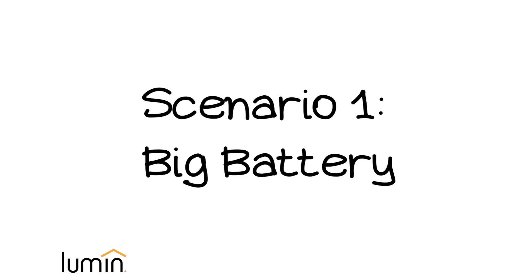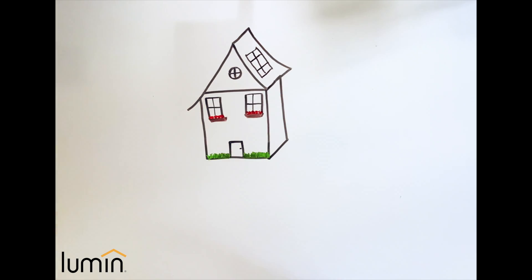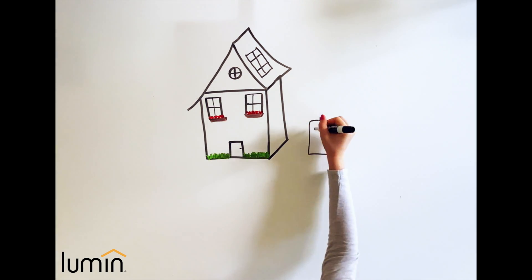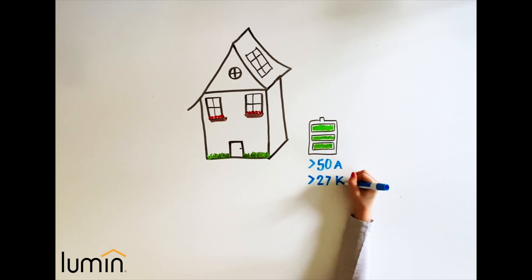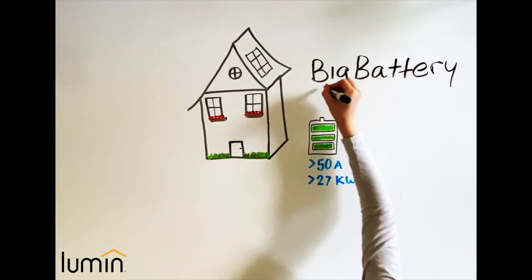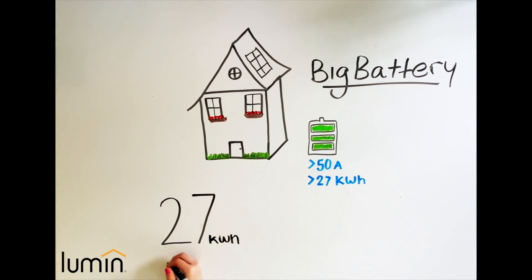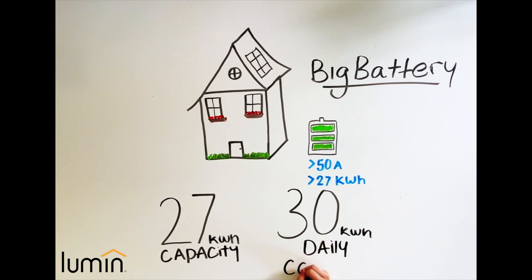Let's go through a couple of scenarios and see how Lumen affects an energy storage system when connected to your home. Let's assume for the first case that you have a big battery—greater than 50 amp discharge capacity with greater than 27 kilowatt hours. Even with a big battery, 27 kilowatt hours of discharge capacity versus 30 kilowatt hours of daily consumption can sometimes be limiting.